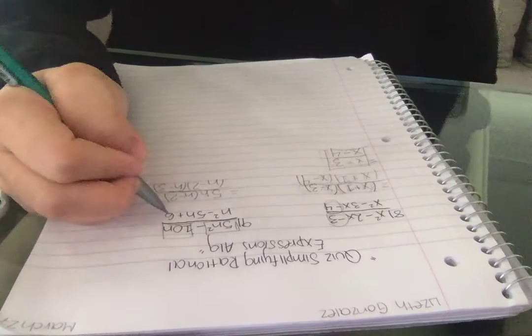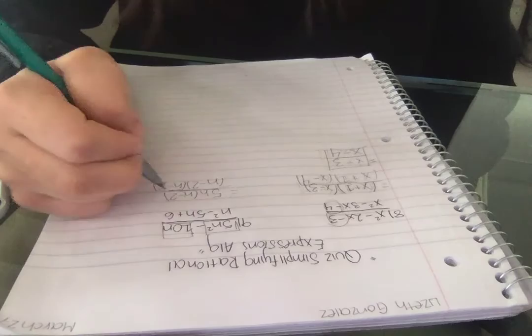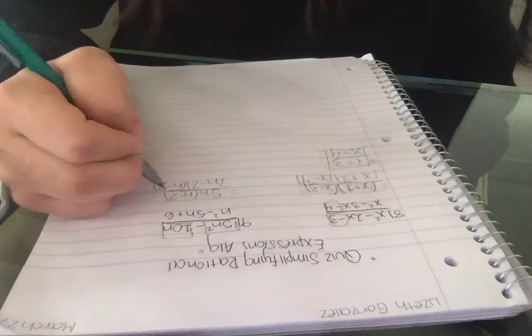Two numbers that make positive 6 when multiplied are minus 2 times minus 3. And if you put them like negative 2 minus 3, it makes up this from this. So now from here I can have my answer.